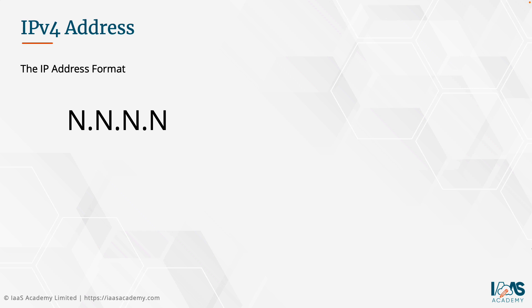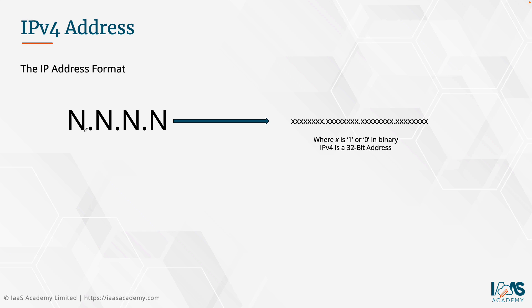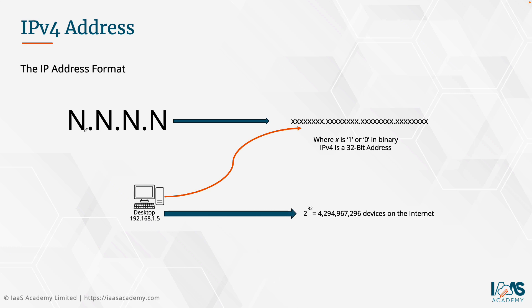So you've got your IPv4 address in decimal comprising four octets, and if we convert that into binary you've got 32 bits of ones and zeros — a total 32-bit address that represents your IP address. Every device that you plug into a network needs to have a unique 32-bit IPv4 address if you are using an IPv4 configuration. That also means the maximum number of IP addresses you can have in an IPv4 configuration is 2 to the power of 32, or approximately 4 billion IP addresses.